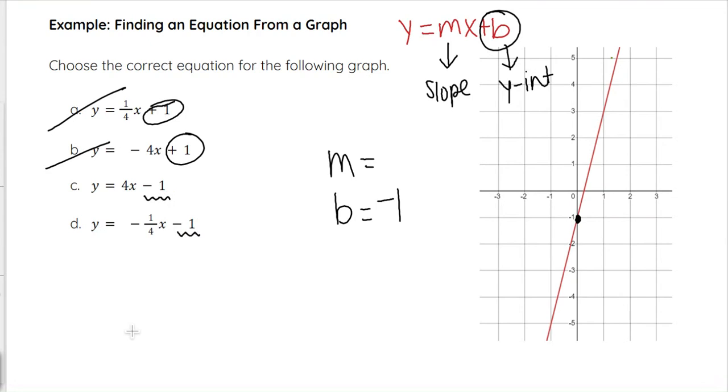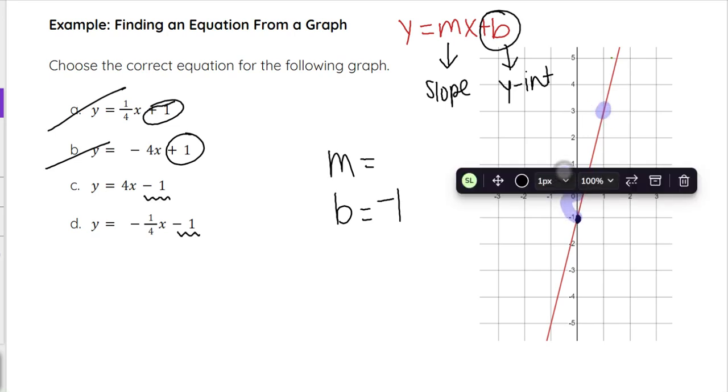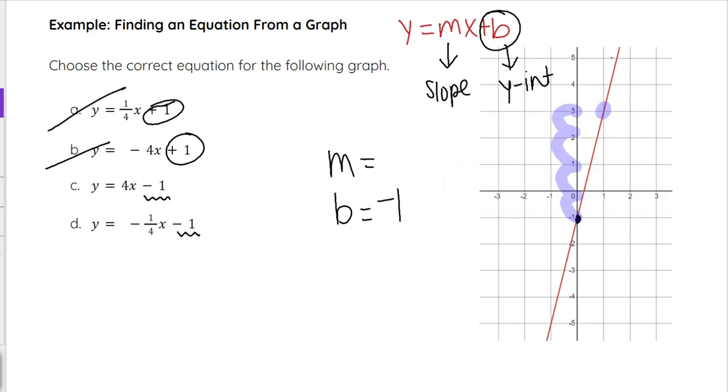Now the other thing I want to point out, you actually don't need to calculate the slope on this one. You could pick a second point and you could count, for example, up 1, 2, 3, 4, and then to the right 1. And we see that our slope is up 4, right 1, 4 over 1, or just 4. And then you'd be able to choose C.